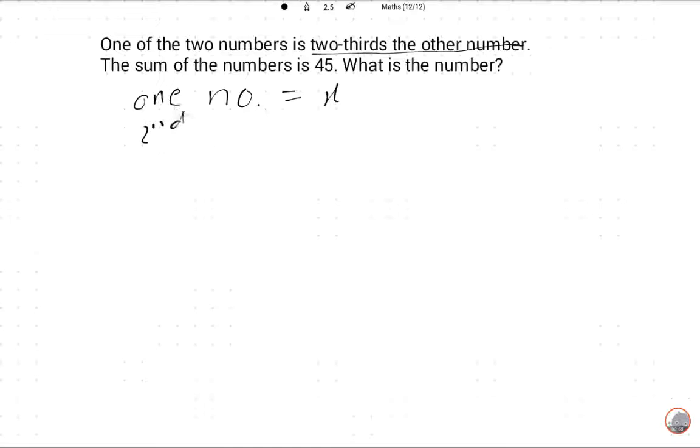So the second number is equal to - if this is X, the second will be two upon third X. So sum of the numbers is equal to 45. This is the corresponding equation. Now how will we solve?